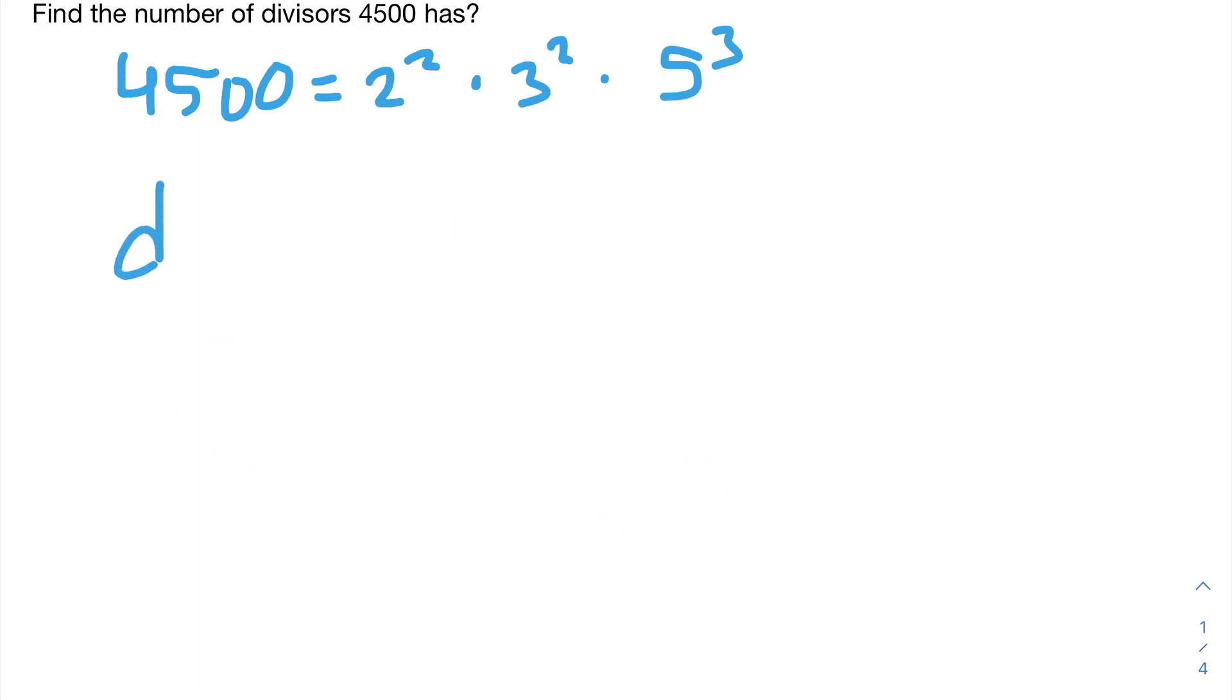So, if D is a divisor of 4,500, it cannot have more factors of any of the primes in the prime factorization of 4,500 than 4,500 has. So, D cannot have more factors of 2 than 4,500 has. That goes for any other prime that is in the prime factorization of 4,500. So, the same goes for 3 and 5.